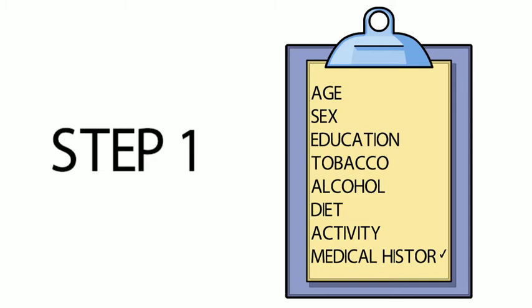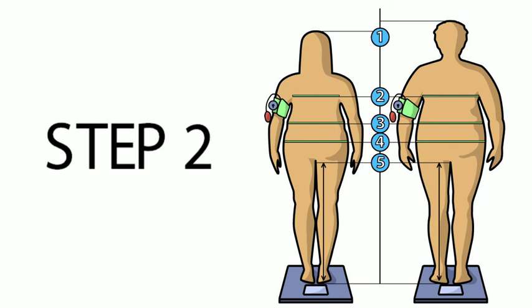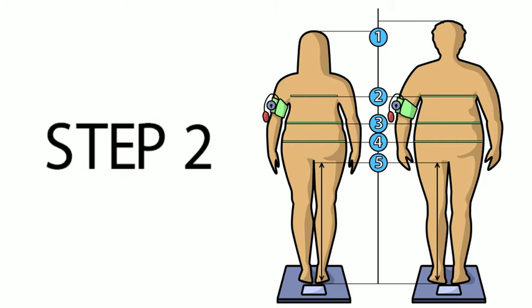Step two of STEPS involves the collection of individuals' physical measurements including height, weight, waist circumference and blood pressure. This information is used to determine the proportion of adults that are overweight and obese or have raised blood pressure, two of the key risk factors for development of a chronic disease.